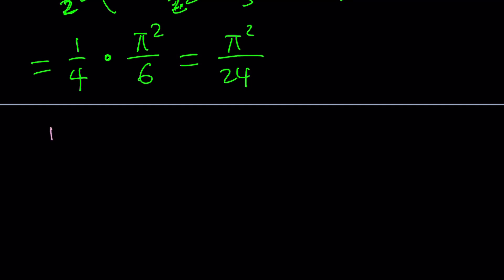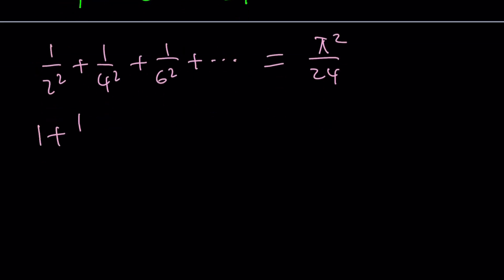We were trying to find the sum of the evens, and that's what we got: 1/2² + 1/4² + 1/6² + ... = π²/24. We also know that the Basel problem tells us the whole sum is π²/6, from which we found the sum of the evens.